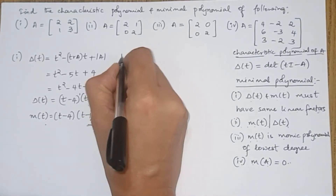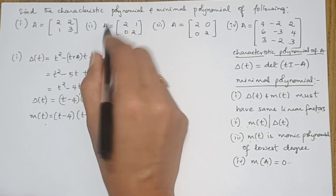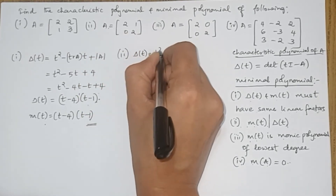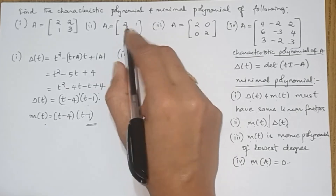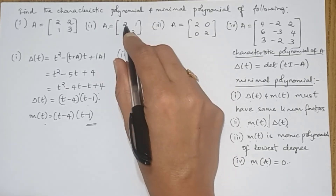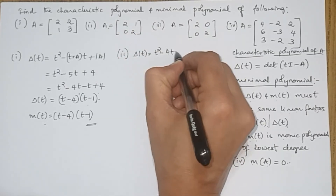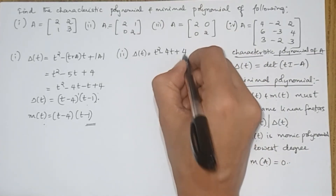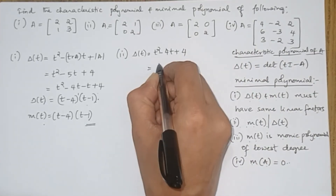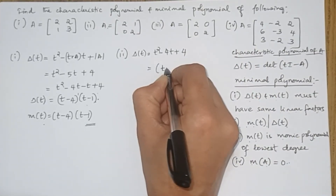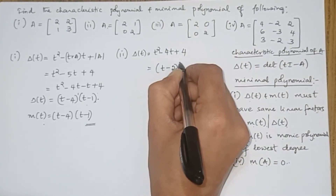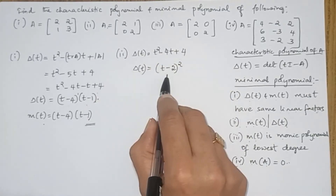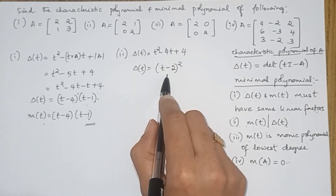For the second example, the characteristic polynomial is T² minus trace(A)·T plus determinant(A). The trace is 2 plus 2 equals 4, and the determinant is 4, giving T² minus 4T plus 4. This simplifies to (T minus 2)², which is the characteristic polynomial.